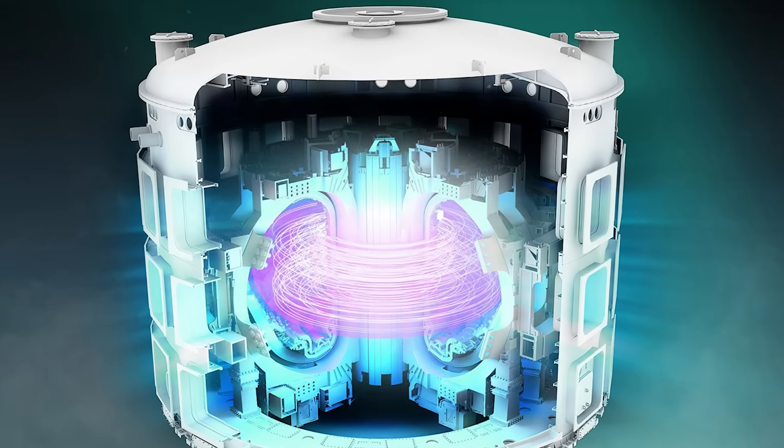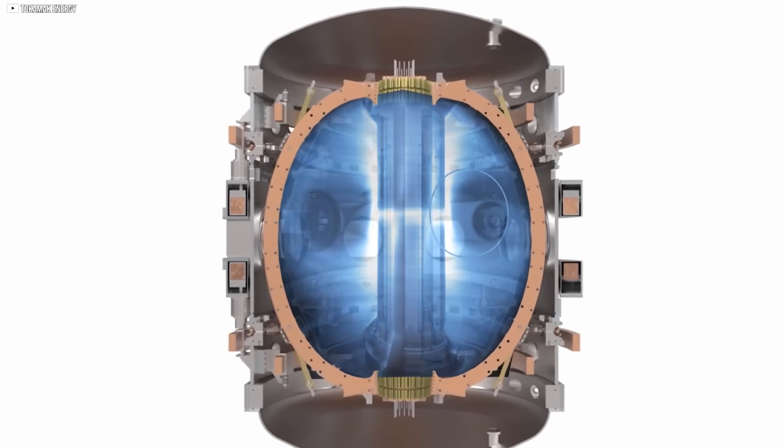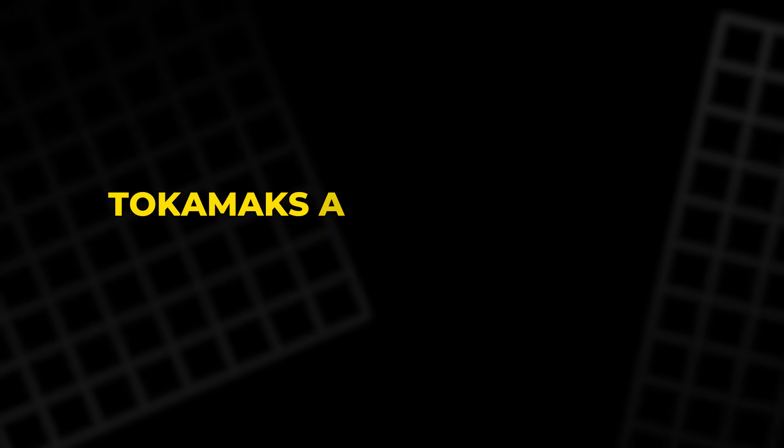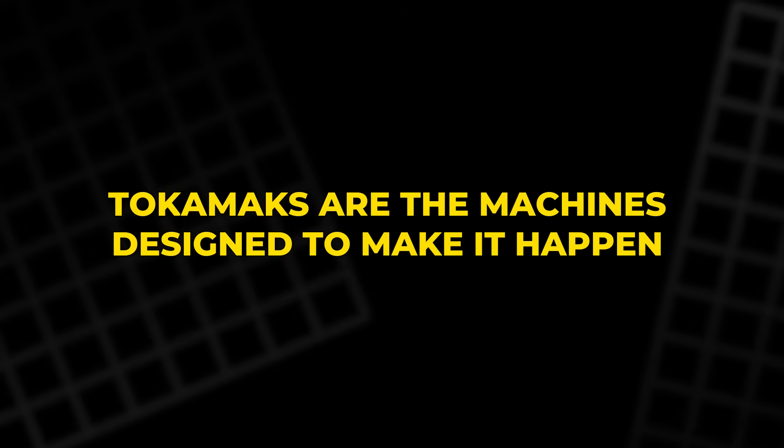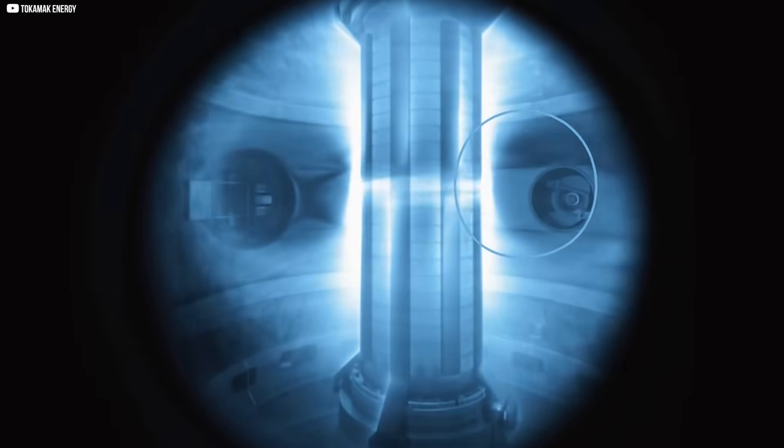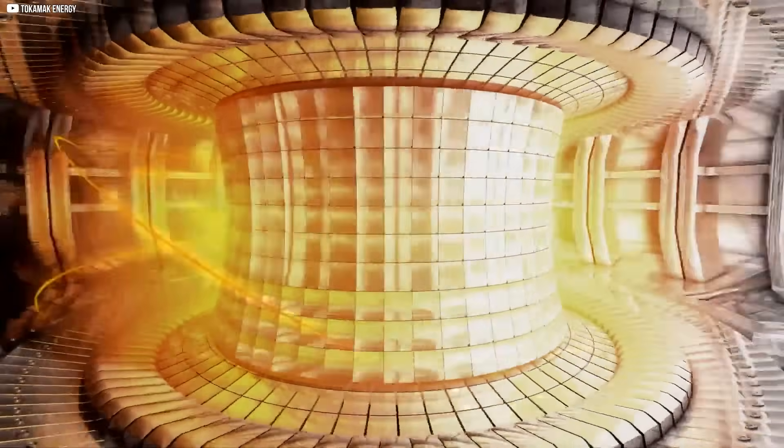At its core, a fusion reactor has one job: to make atomic nuclei crash together and release energy. Simple to say, hard to do. Tokamaks are the machines designed to make it happen. Shaped like a donut, their magnetic fields trap a spinning storm of plasma so hot it would vaporize any material on Earth.